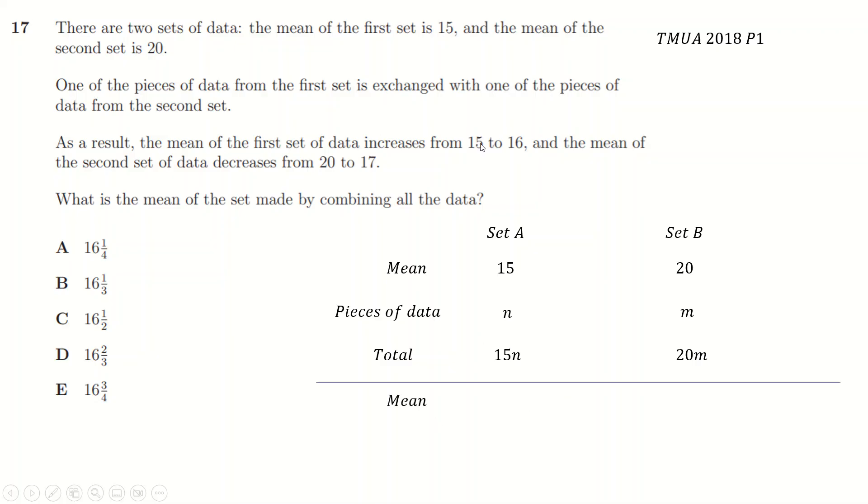And now, when you change, the means turn to 16 and 17 is the second sets of means. And the pieces of data, because you do a one-for-one swap, stay the same. So this reduces by one, but increases by one because you swapped, and likewise. And so the totals there are 16N and 17M. Now, the totals between these two groups must be the same. So the total in here must be the same as total in there, because all you did was swap two pieces of data around.